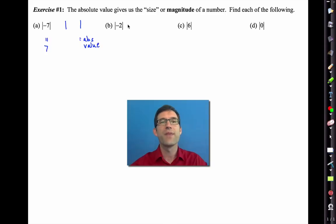The absolute value of seven is simply equal to seven. So the idea of the size of a number is it tells you how big it is. In a certain sense negative seven and seven are the same size. They're not the same number but they're the same size. Likewise the absolute value of negative 2 is 2. The absolute value of 6 is just 6, and the absolute value of 0 is 0.